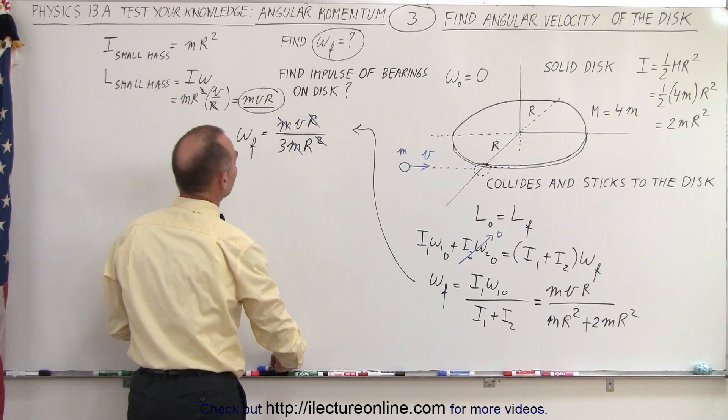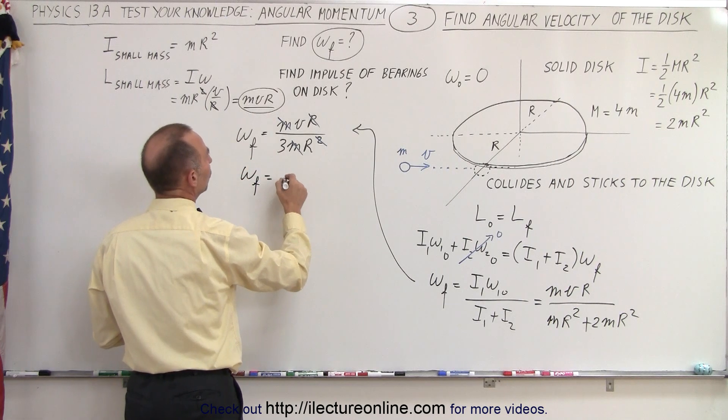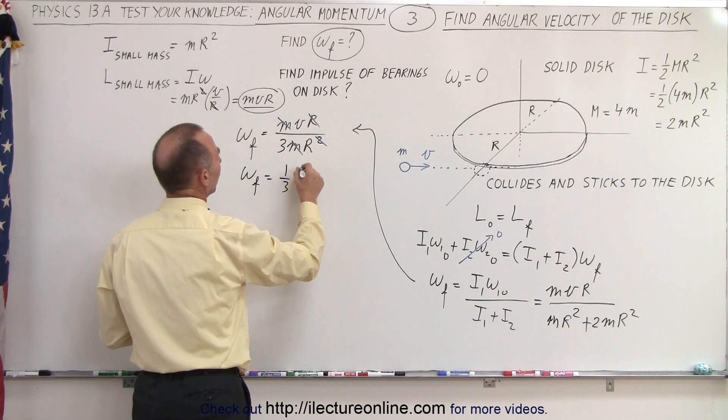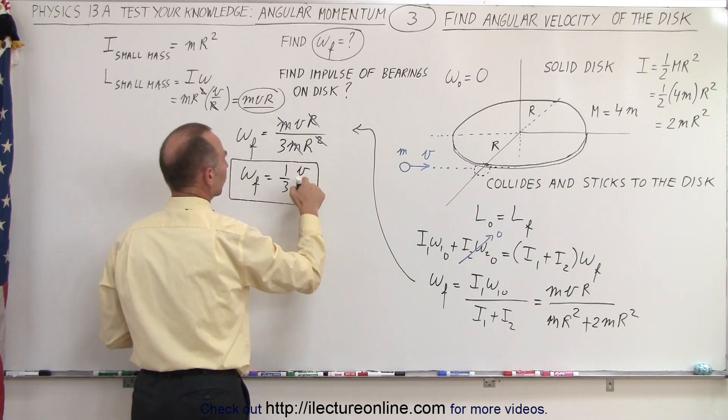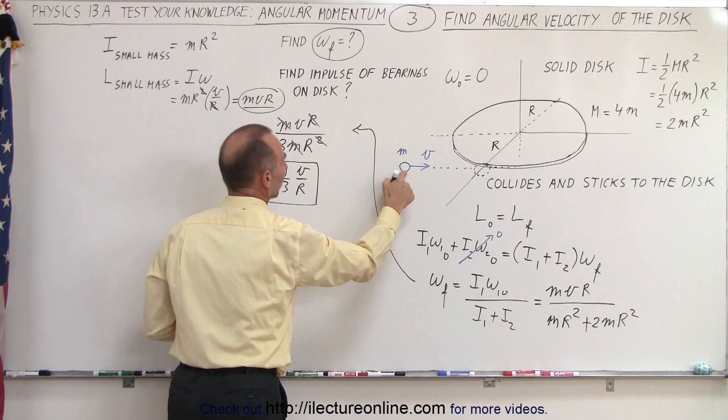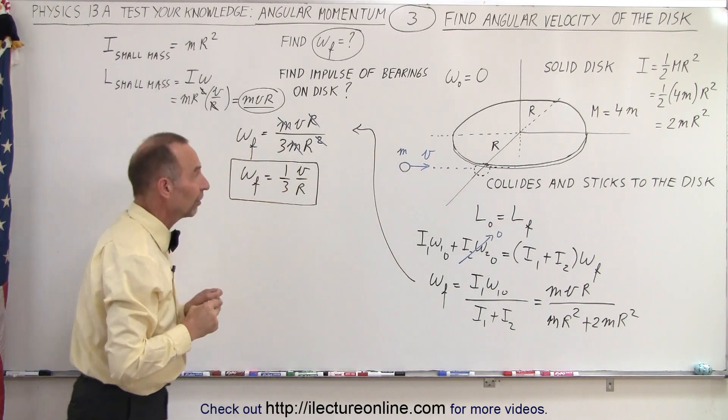You can see then that the ω_final would be equal to one-third v over r. That's in terms of the original velocity of the mass and r being the radius of the disc.